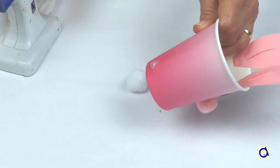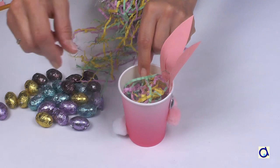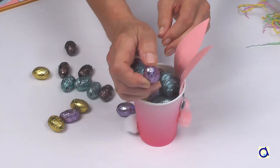At the back of the cup, glue a white pom-pom to represent the tail of the bunny. Now, fill the cup with straw and then garnish it with Easter eggs.